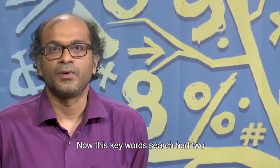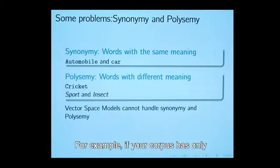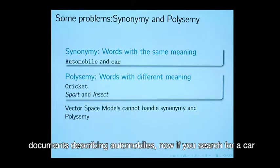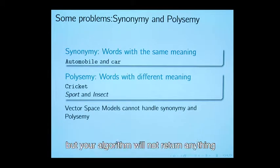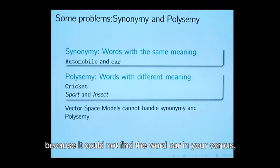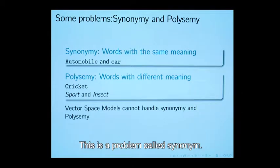This keyword search had two problems mainly. For example, if your corpus has only documents describing automobiles, if you search for a car, though they mean the same thing, your algorithm will not return anything because it could not find the word car in your corpus because all the corpus had only automobiles. This is a problem called synonymy.